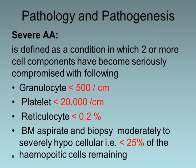Severe aplastic anemia is defined as a condition in which two or more cell components have become seriously compromised, with a granulocyte count less than 500 per cubic millimeter, platelet less than 20,000 per cubic millimeter, and reticulocytes less than 0.2 percent. Bone marrow aspirate and biopsy show moderately to severe hypocellularity, meaning less than 25 percent of hemopoietic cells remaining, with the other 75 percent being fatty tissue.